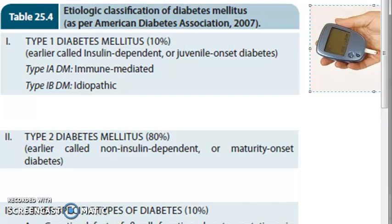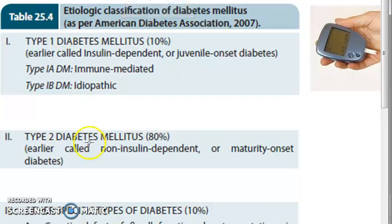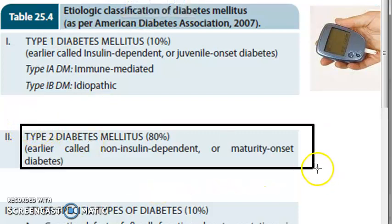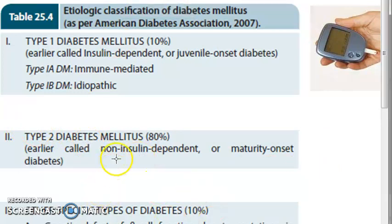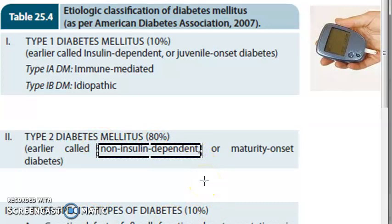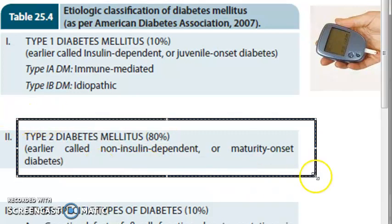Type 2 is the most common type of diabetes mellitus. This is non-insulin dependent. You cannot just give insulin because the person has insulin but is not able to take it up. So this is non-insulin dependent - this is the most common type of diabetes.